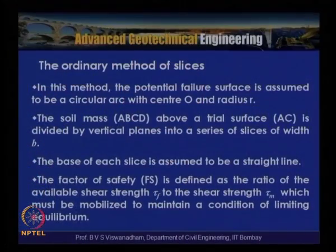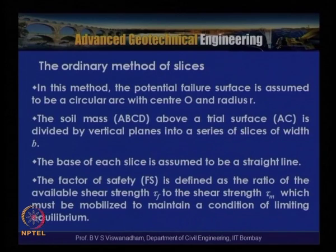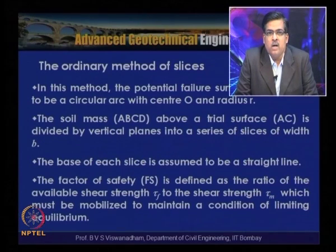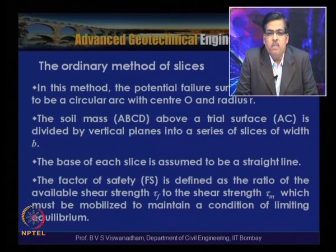In the ordinary method of slices, the potential failure surface is assumed to be circular with center at O and radius R. The soil mass within the circular arc zone, from the slope surface to the crest, is divided into vertical slices of width B. The base of each slice is assumed to be a straight line for convenience.